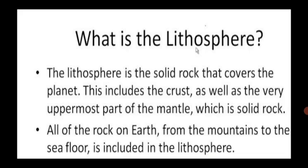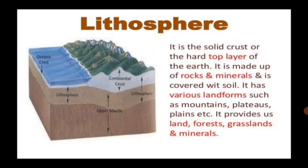What is the Lithosphere? The Lithosphere is the solid rock that covers the planet. This includes the crust as well as the very uppermost part of the mantle, which is a solid rock. All of the rock on the earth, from the mountains to the seafloor, is included in the Lithosphere.